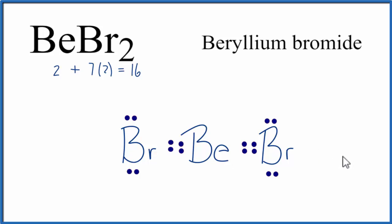The most likely Lewis structure, or the best Lewis structure for BeBr₂, looks like this. This is Dr. B with the Lewis structure for beryllium bromide, and thanks for watching.